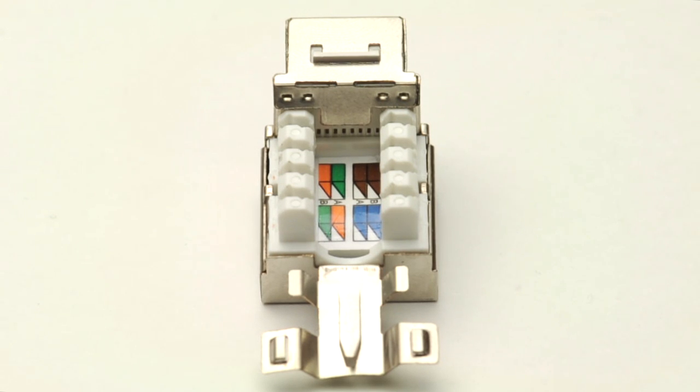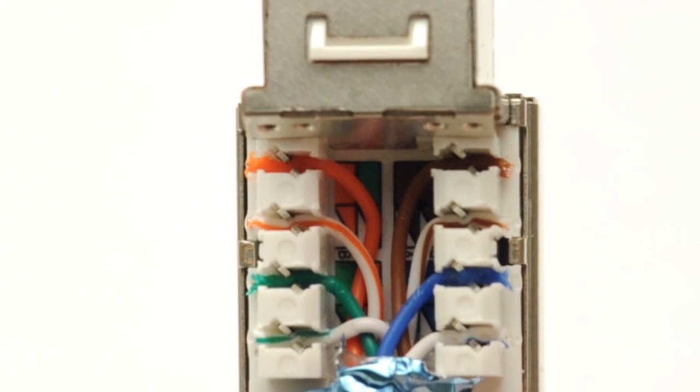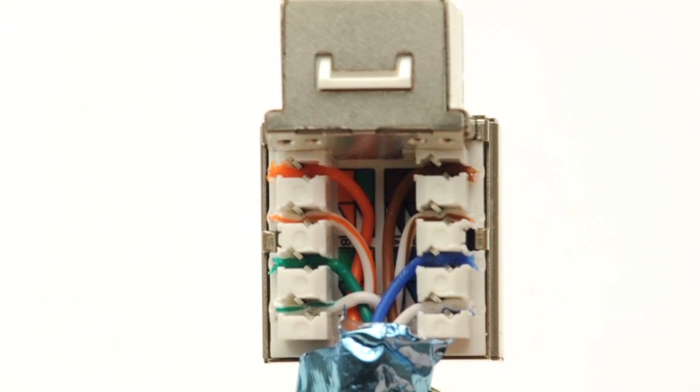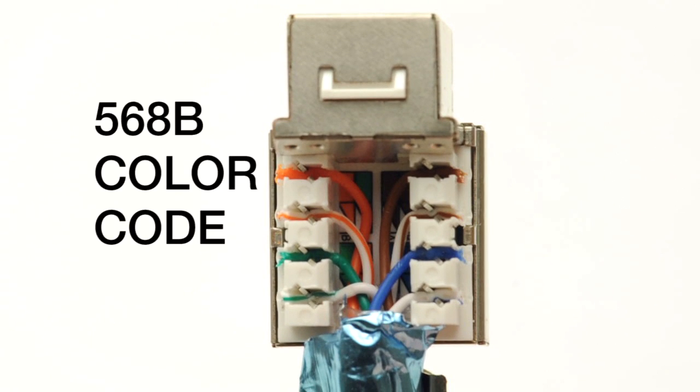You'll notice that each conductor has a color: orange, orange white, green, green white, etc. Match the colored conductors to the color code and place in the appropriate IDC slot. For most applications, choose the 568B color code.